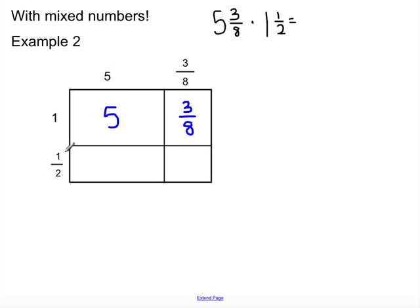Okay, so then we have 5 times 1 half. 5 wholes is 5 over 1 times 1 half. Again, not too bad. We have 5 over 2. Or, if you want to use decimals for this one, 2.5.